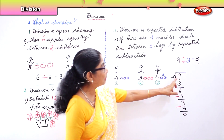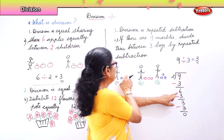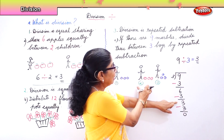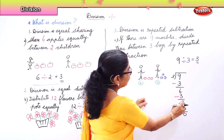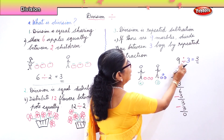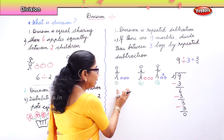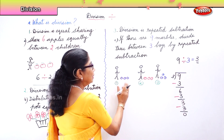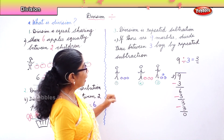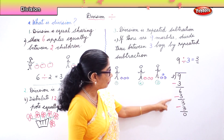Division is repeated subtraction. Nine minus three — nine take away three is six. The first three marbles go to the first boy. Six minus three — the second three marbles go to the second boy. Then three minus three — the third three marbles go to the third boy. Nine divided by three is three. So each boy gets three plus three plus three, that is three, six, nine marbles, equally divided between the three boys by repeated subtraction.